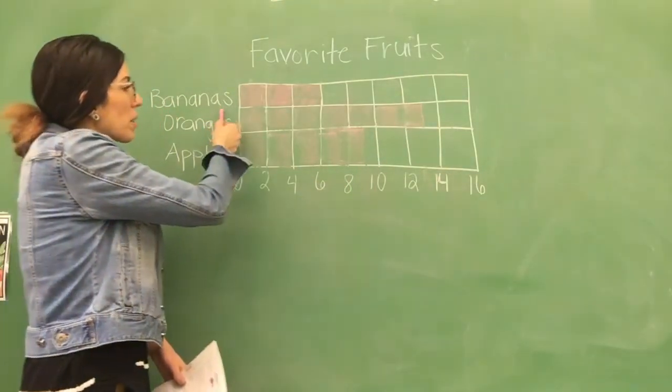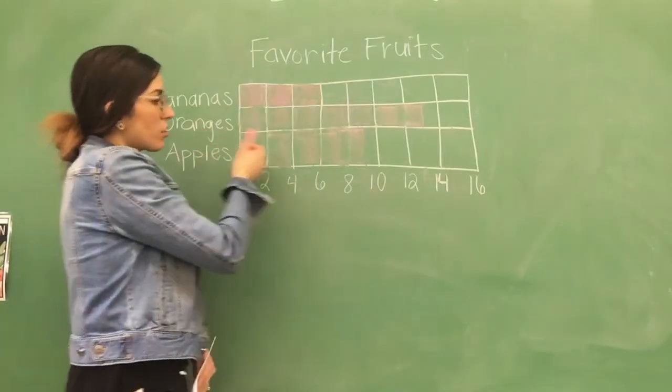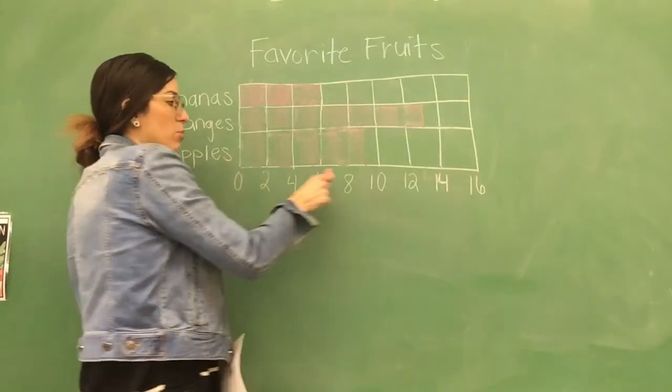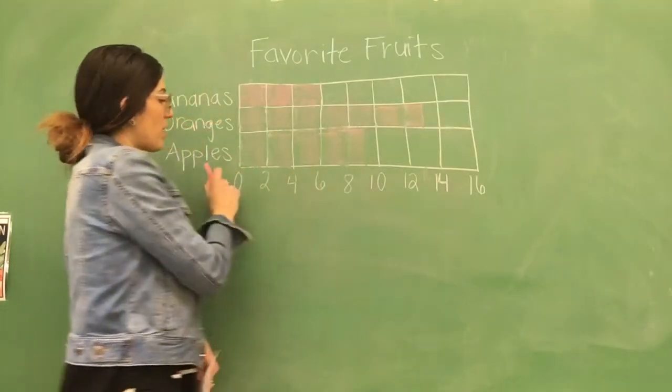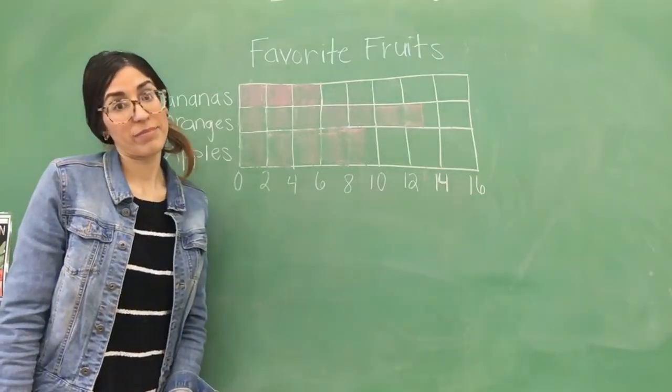So, we have bananas. Six students love bananas. Oranges, we have 13 students love oranges. And apples, we have nine students loving apples, okay? Or that is their favorite fruit. Does that make sense, class?